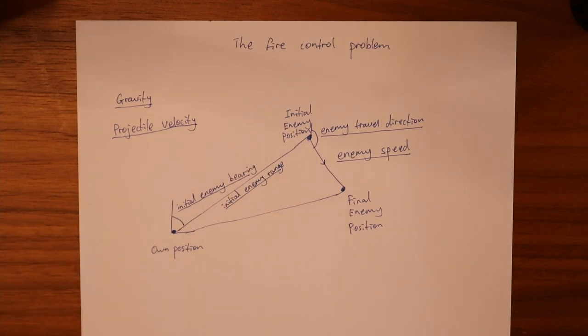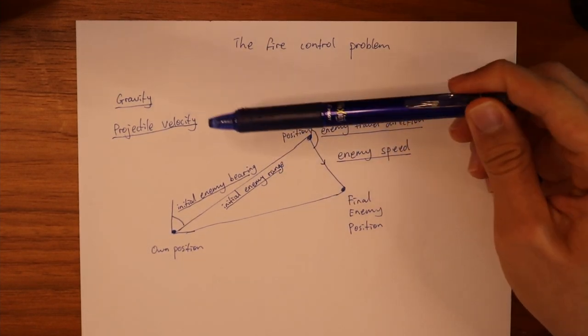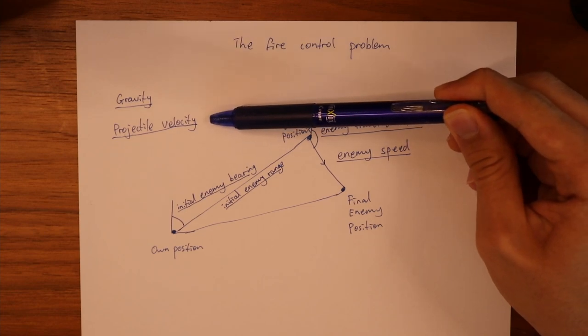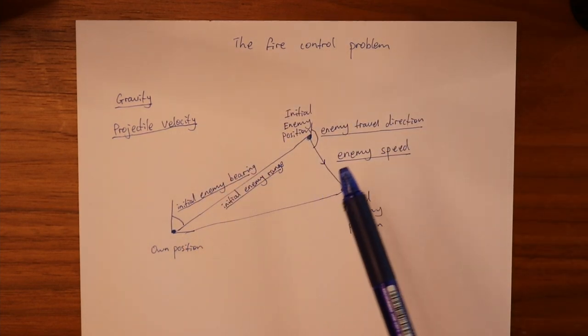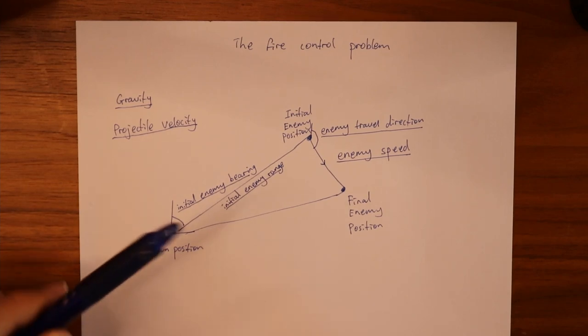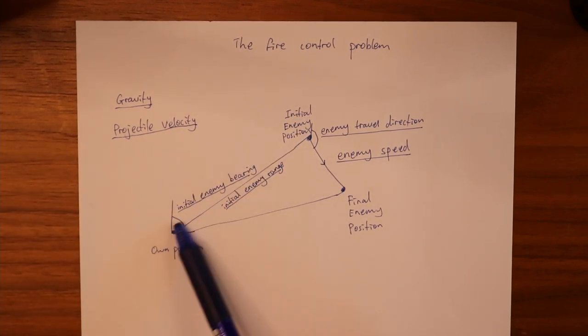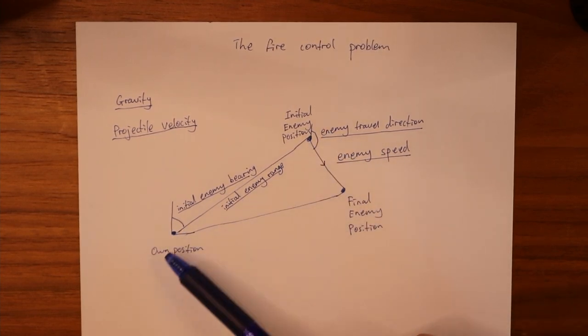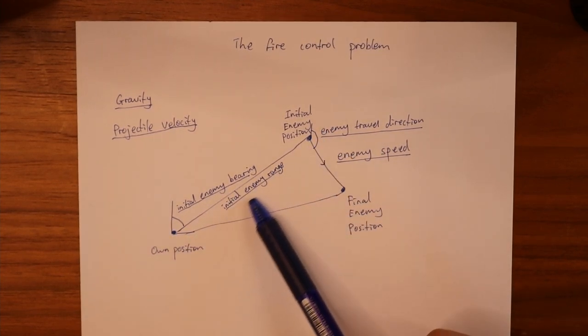Six variables need to be known in order for the calculation to be done. You need to know the strength of gravity. You need to know how fast the projectile is when it's being fired. You need to know the direction of the enemy initially which I've called initial enemy bearing. You need to know how far away the enemy is which I've called initial enemy range.